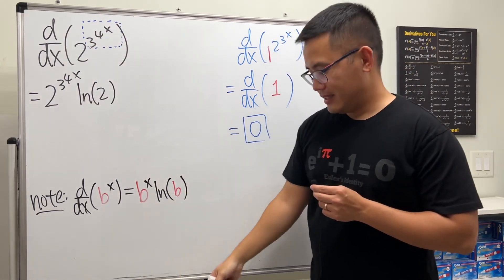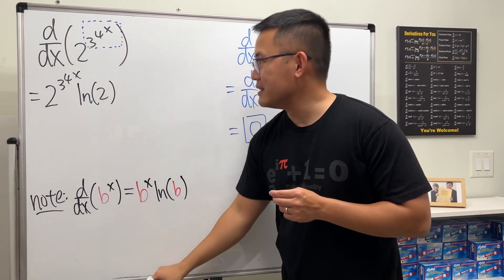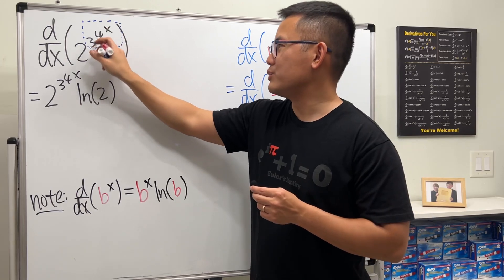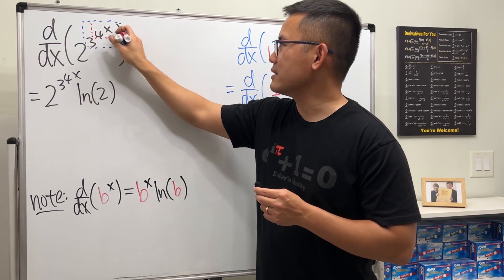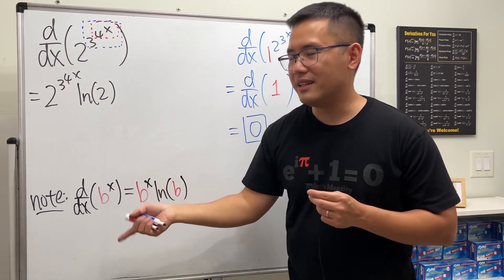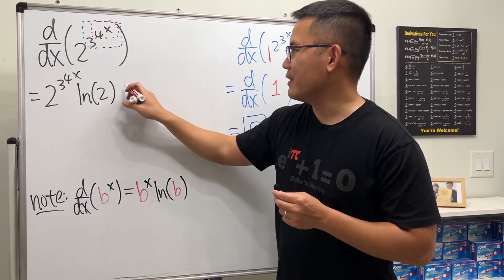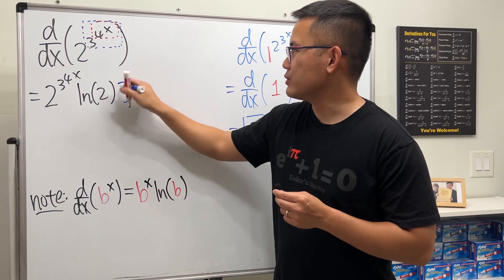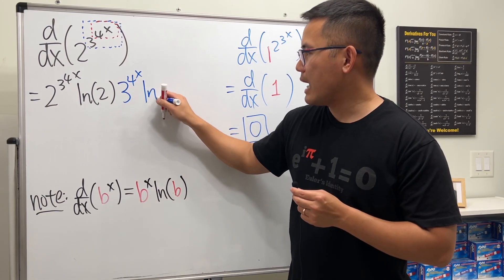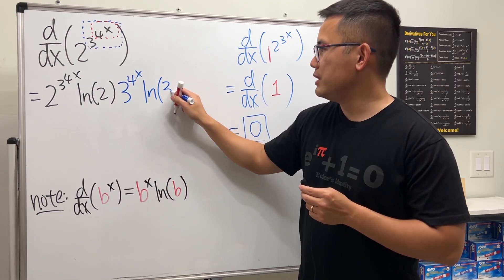For the box, what we have is 3 to the 4x power, so it's like 3 to another box inside. The derivative of that is 3 to that thing. It repeats first, so 3 to the 4 to the x, and then multiply by ln of the base 3.